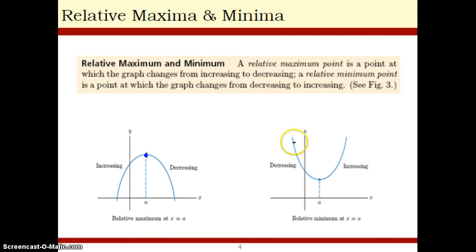Same thing, a relative or local minimum is where a function goes from decreasing to increasing. It's a low point on a graph. Also remember, in this case, this graph has no minimum.